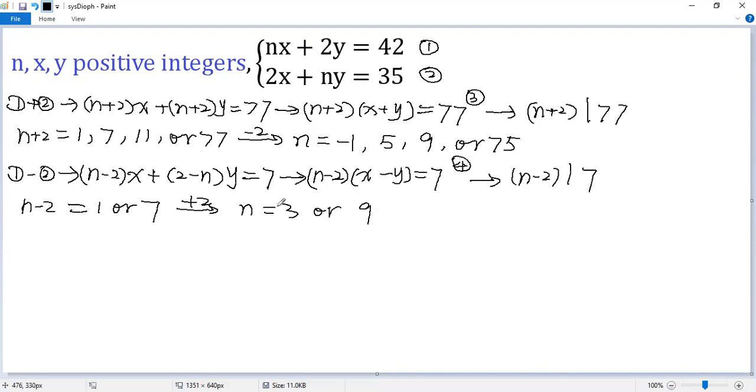From this row and this row and this row, we know the only value for n would be 9, right? So n equals 9.